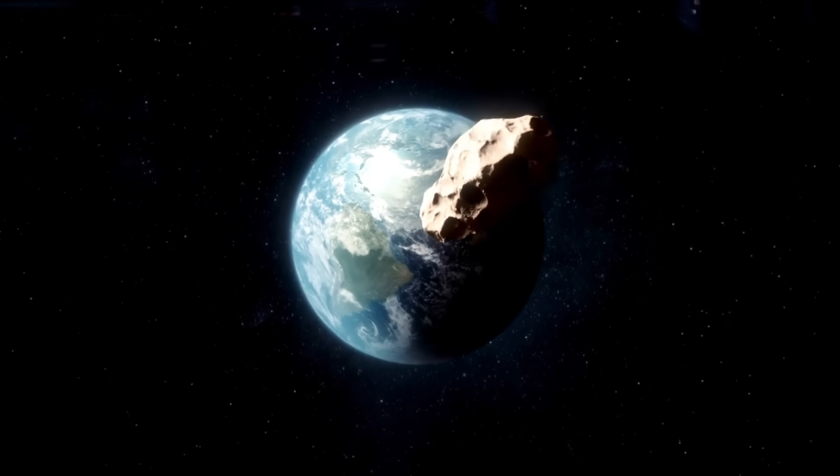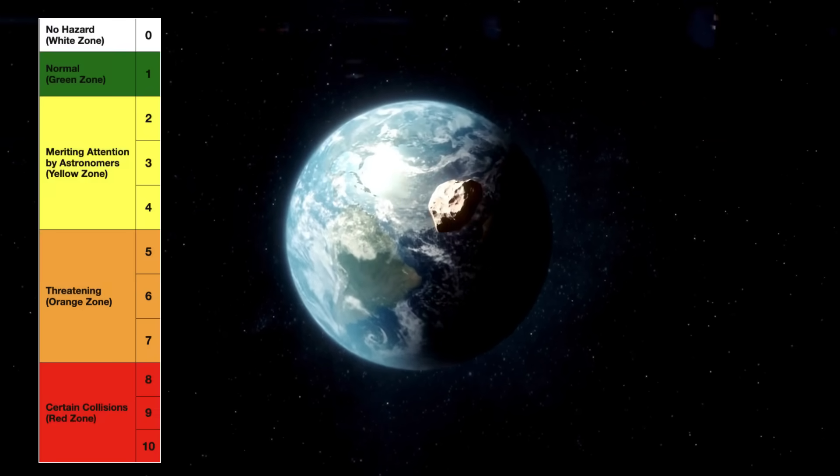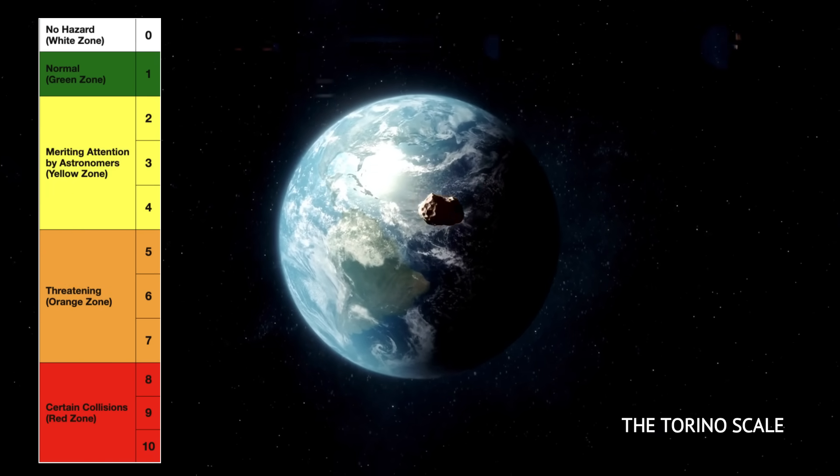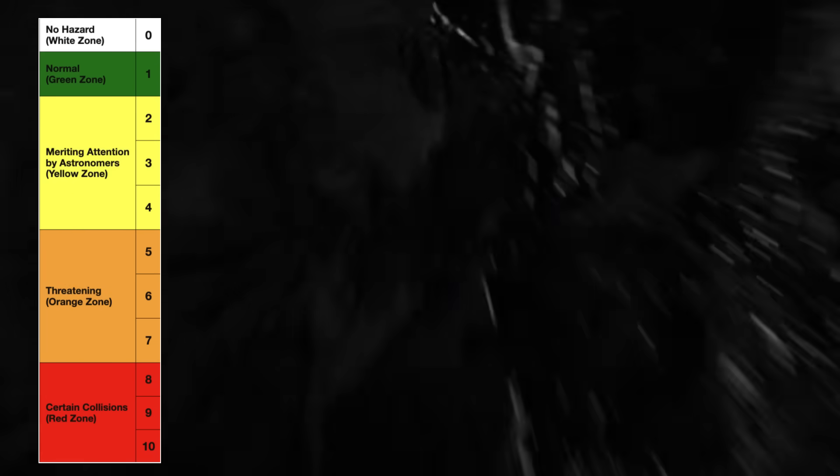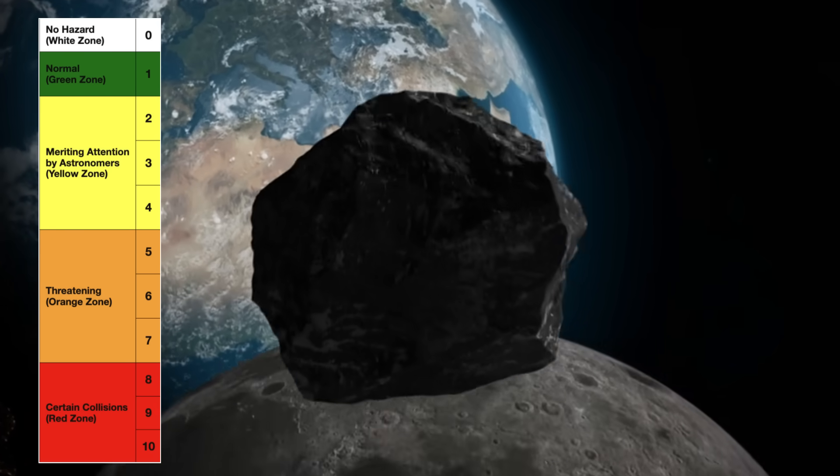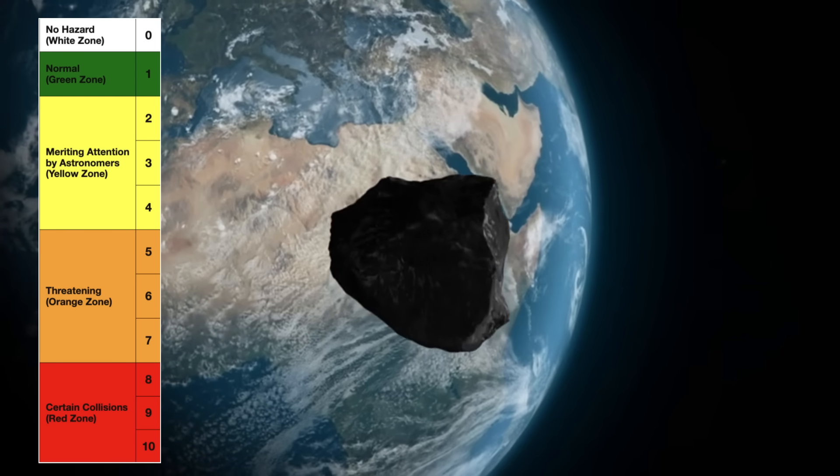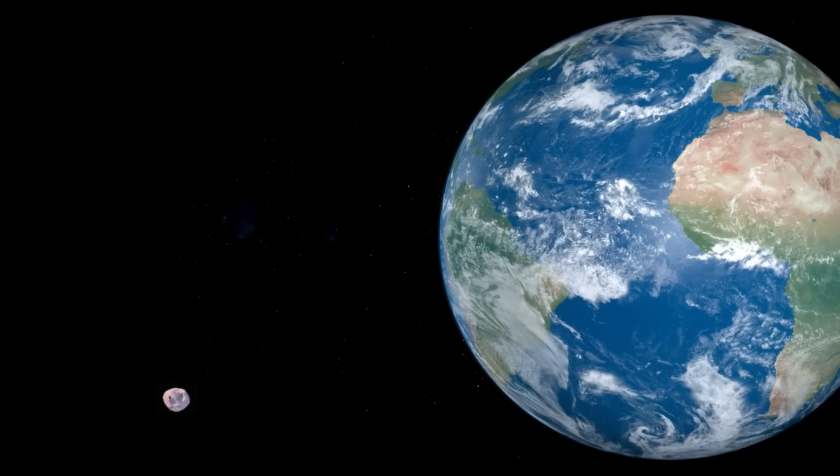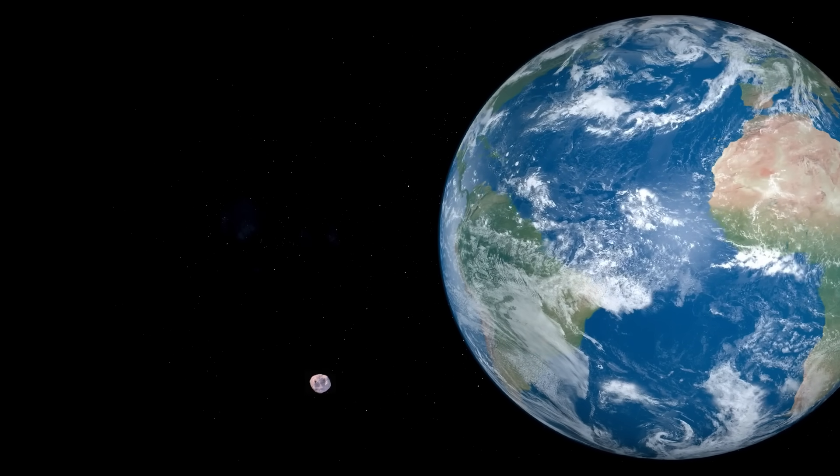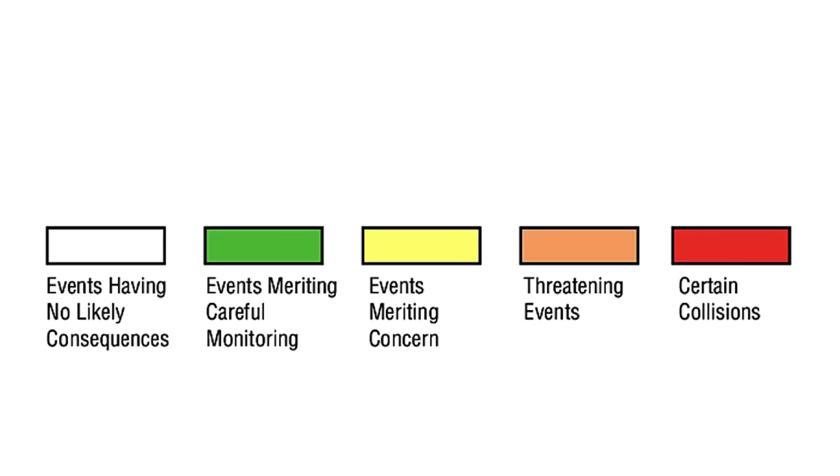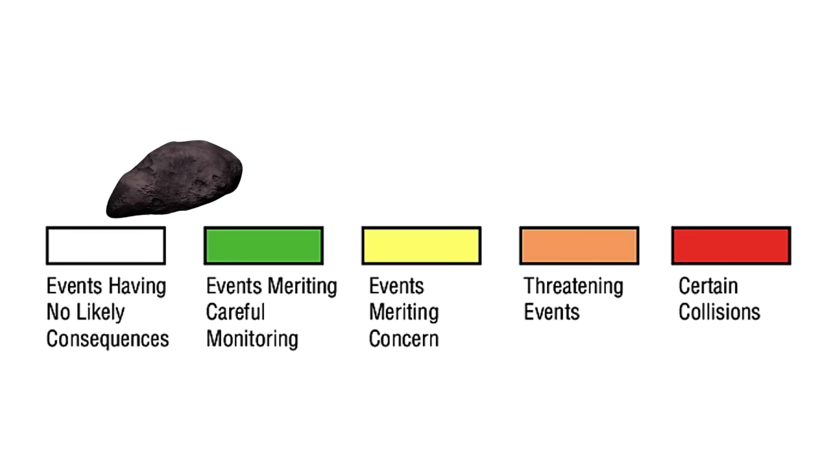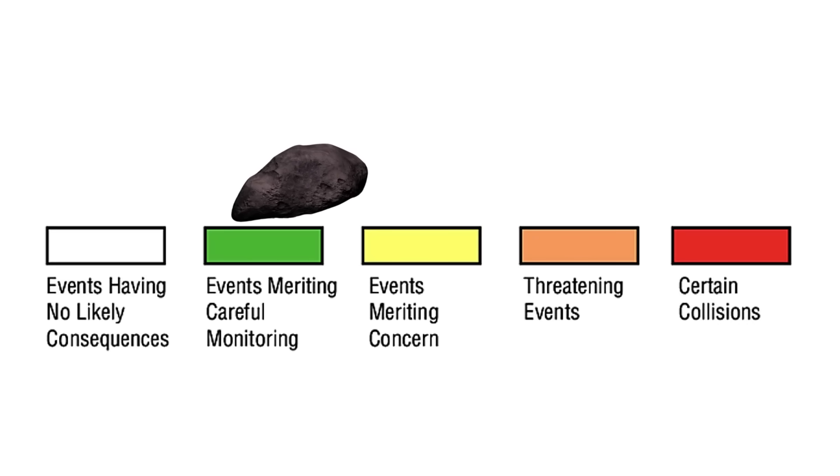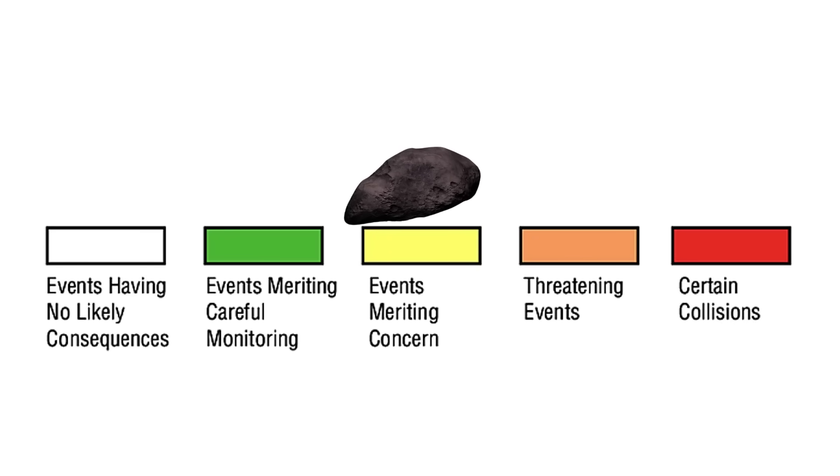How do we determine the risk of an incoming asteroid? Enter the Torino scale, a system designed to assess both the likelihood of an asteroid collision with Earth and the potential consequences of such an impact. 2024 YR-4 has rocketed to the top of official impact risk lists on both sides of the Atlantic and has the rare rating of 3 on the Torino scale that ranges from a no-risk zero to a civilization ending 10.